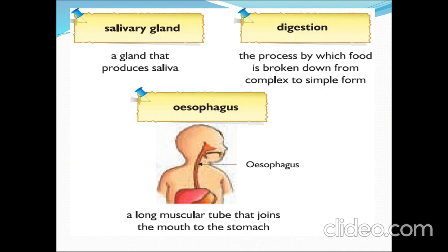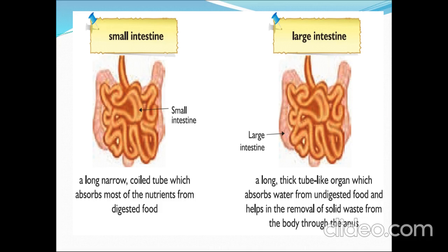The esophagus is the food pipe through which food is sent to the stomach — it is a long muscular tube. The small intestine is a long narrow coiled tube which helps in absorbing the nutrients of our food and in the process of digestion.